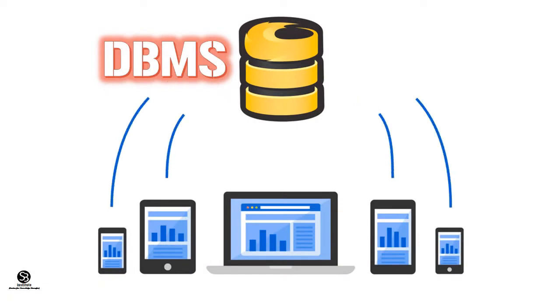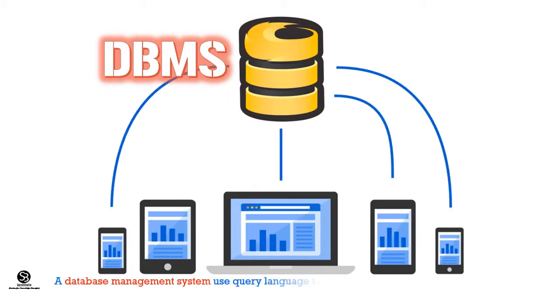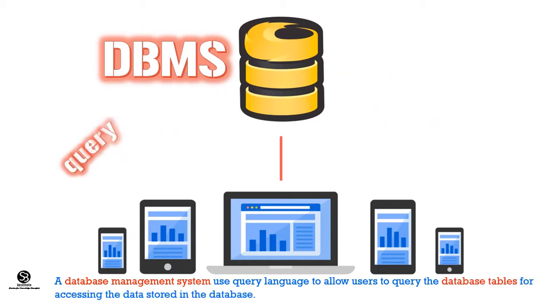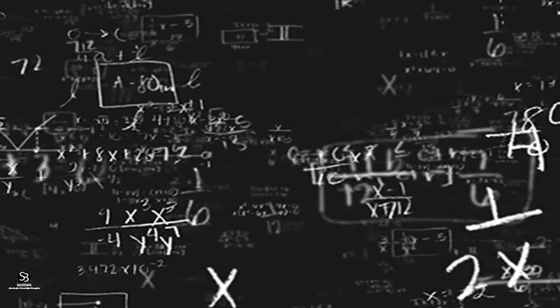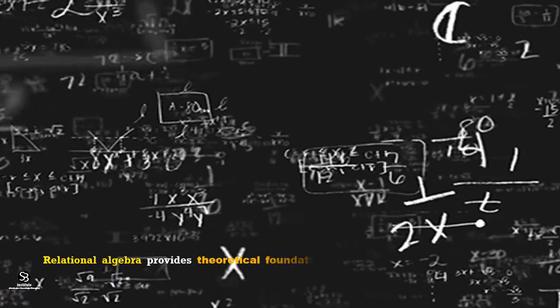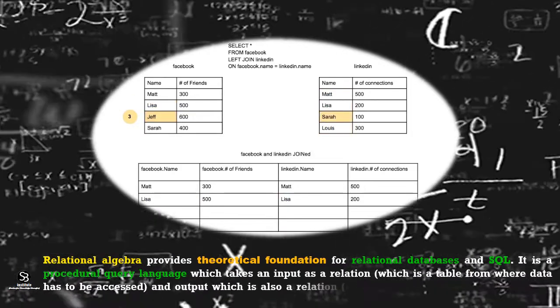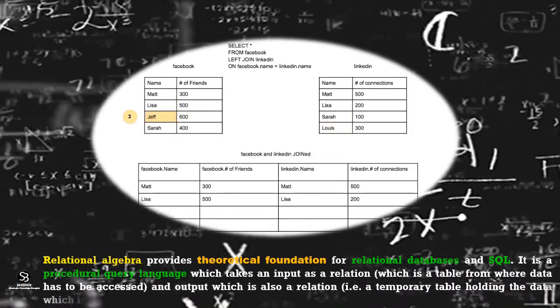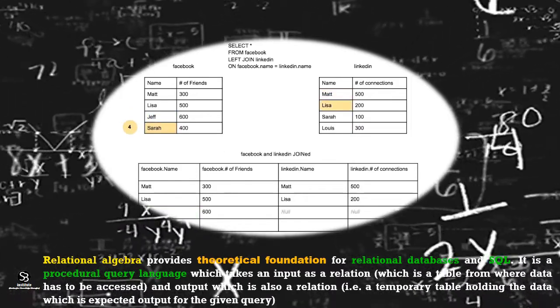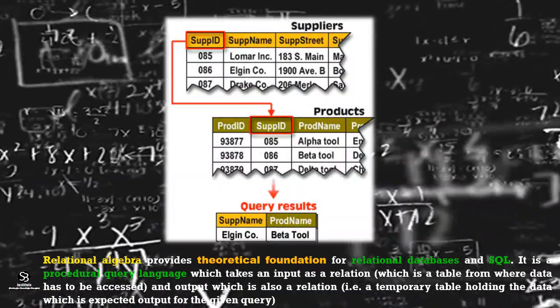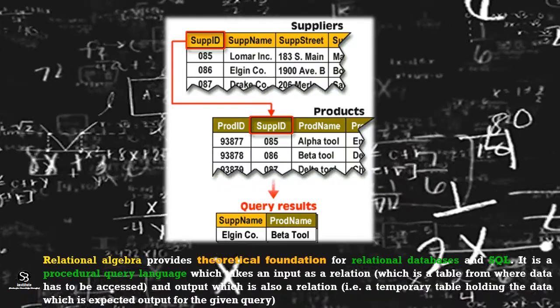We know that a database management system uses query language to allow users to query the database tables for accessing the data stored in the database. Relational Algebra provides a theoretical foundation for relational databases and SQL. It is a procedural query language which takes an input as a relation — a table from where data has to be processed — and output which is also a relation, that is a temporary table holding the expected output for a given query.